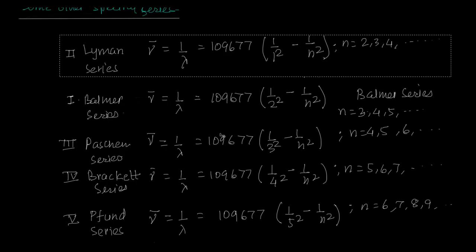It was because the lines belonging to this, they fell in the visible region. That's why this was found first. So that's why this had taken the serial number one.